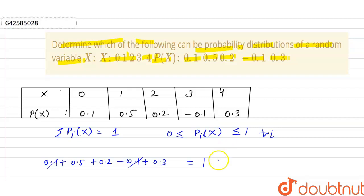this minus 0.1 does not lie between 0 and 1. Minus 0.1 does not lie between this range, then it will not be a probability distribution.